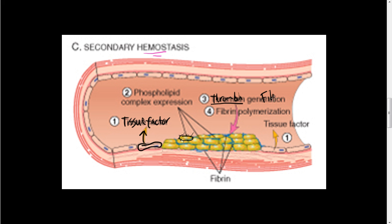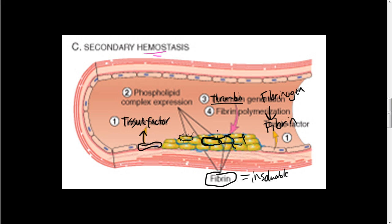What thrombin does is it converts fibrinogen to fibrin. Fibrin gets deposited among these platelets. Fibrinogen is just circulating in the bloodstream as an inactive molecule, and as soon as thrombin comes around — produced because tissue factor was released from the endothelial cells — thrombin converts fibrinogen to fibrin. Fibrin is this insoluble molecule that forms a mesh between the platelets, creating a more stable plug. This is called secondary hemostasis.